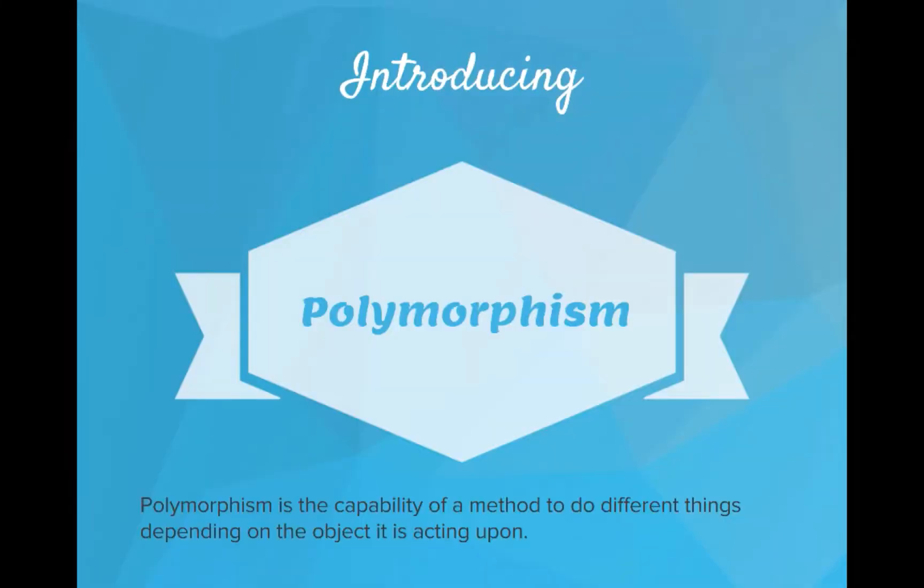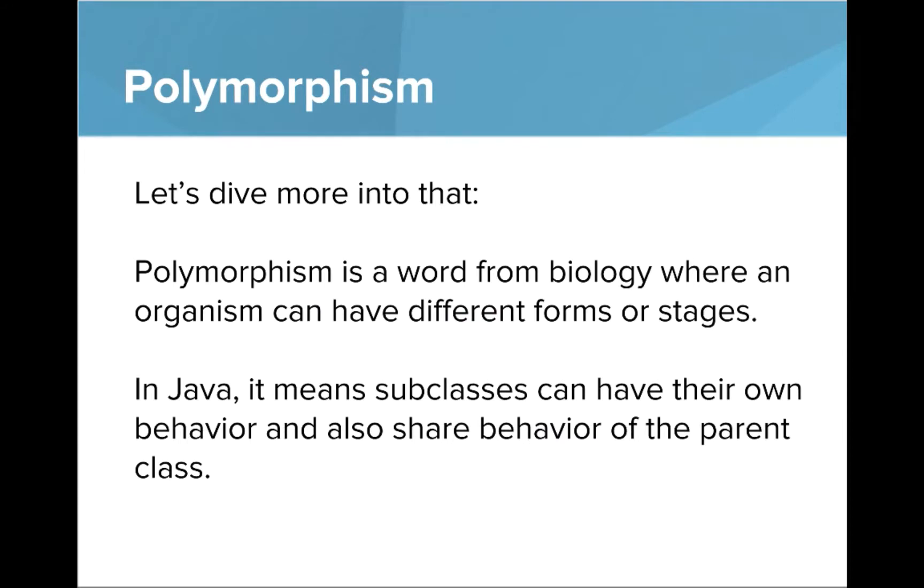So introducing polymorphism. Polymorphism is the capability of a method to do different things depending on the object it is acting upon. Let's dive a little bit more into that definition. Polymorphism is a word from biology where an organism can have different forms or stages. In Java, it means subclasses can have their own behavior and also share behavior of the parent class.